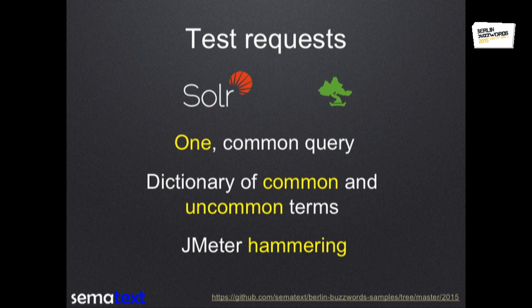The test requests were run using JMeter hammering the instances, and we have a dictionary of common and uncommon terms to simulate what we would expect from users. However, remember these were synthetic tests. You can find the GitHub account that holds the data and all the stuff we used for tests, but still, this is a synthetic test — nowhere near production.